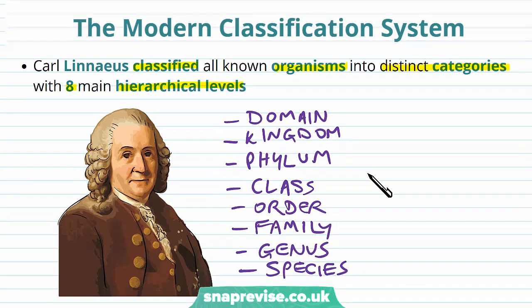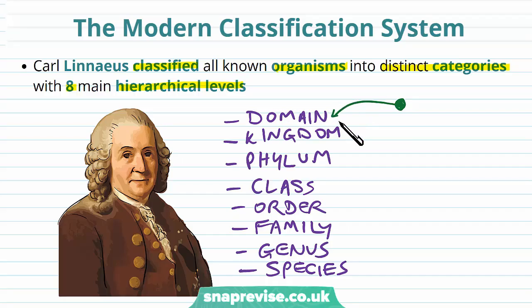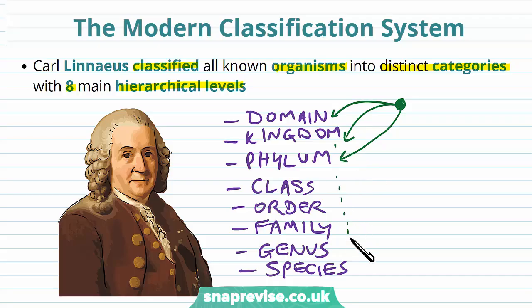We'll go through each of these terms one at a time, but overall, if we found a new species, they get classed first into a domain, then out of those domains we put them into a kingdom, then a phylum, and eventually they all have a particular type of each level until you get right down to the species representing that individual organism.